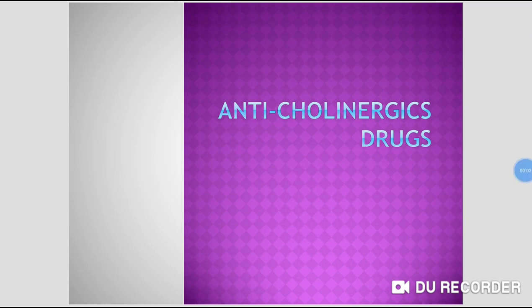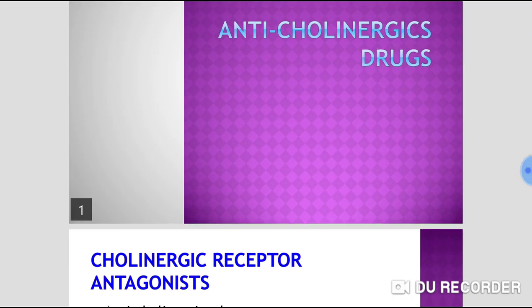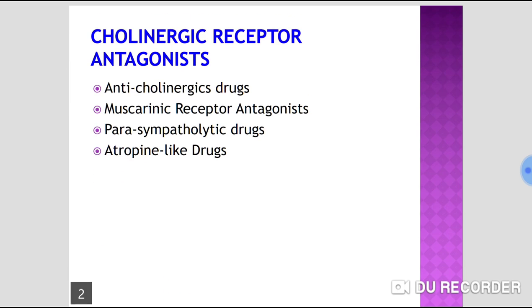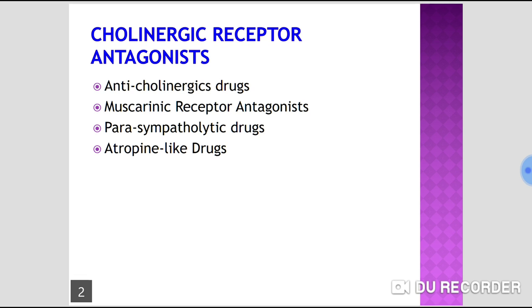Today we are going to discuss anticholinergic drugs. Anticholinergic drugs are also called cholinergic receptor antagonists, muscarinic receptor antagonists, parasympatholytic drugs, or atropine-like drugs. Atropine is the prototype drug, meaning it represents the whole class.